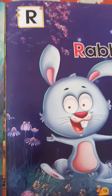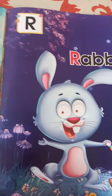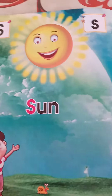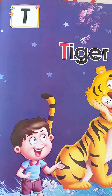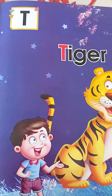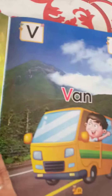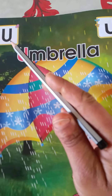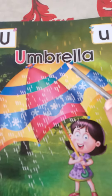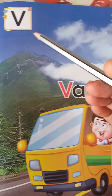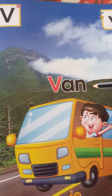R for rabbit, S for sun, T for tiger, U for umbrella, V for van.